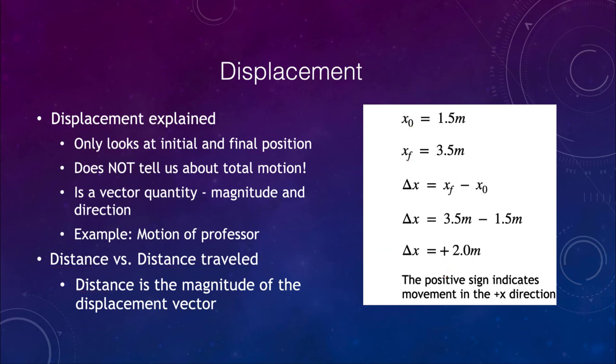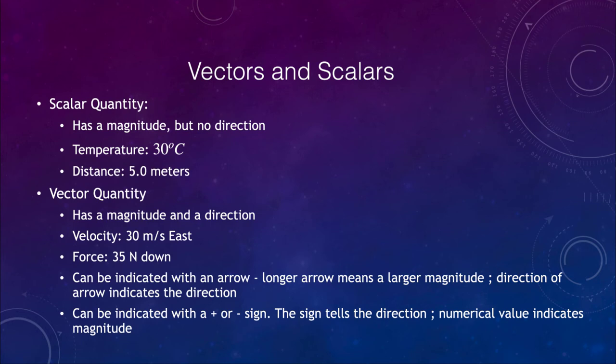Now let's review a little bit and look at vectors and scalars. So a scalar quantity has a magnitude but does not have a direction. So examples of this could be a temperature of 30 degrees Celsius. It could be a distance of five meters. These are things that do not have a specific direction. So remember, distance is the magnitude of the displacement vector. So distance tells us how far, the displacement tells us how far and in what direction.